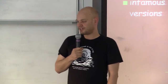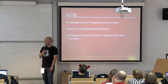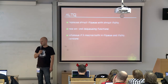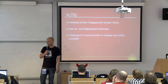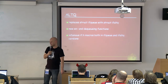How does ALTQ work? It replaced the ifq struct with an ifaltq. It adds new enqueue and dequeue functions that do the actual bandwidth shaping or priority queuing. Our if.h macros have to exist in two versions — one for ifq and one for ifaltq.